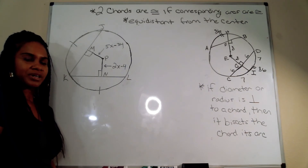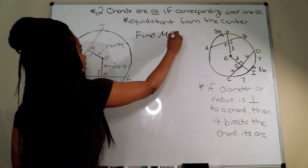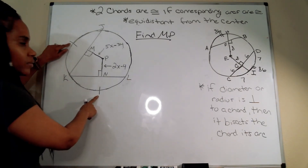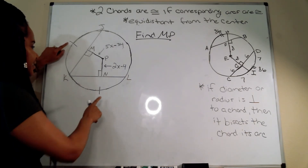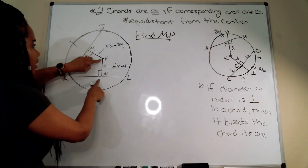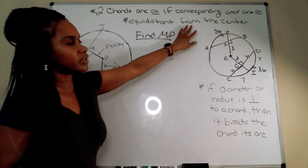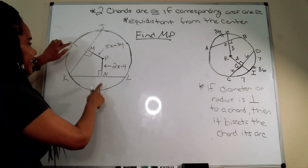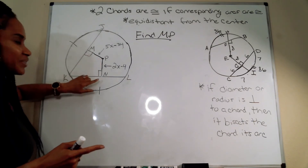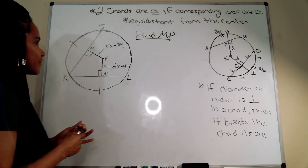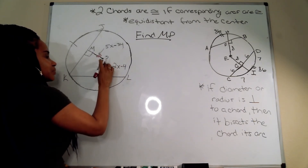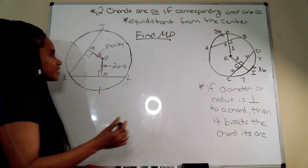The next example asks us to find MP. We're given congruence marks showing arcs are congruent, which makes the chords congruent. Congruent chords mean segments PN and PM are equidistant from the center. Since they're equidistant, MP and PN are congruent, so I can set their expressions equal to each other.